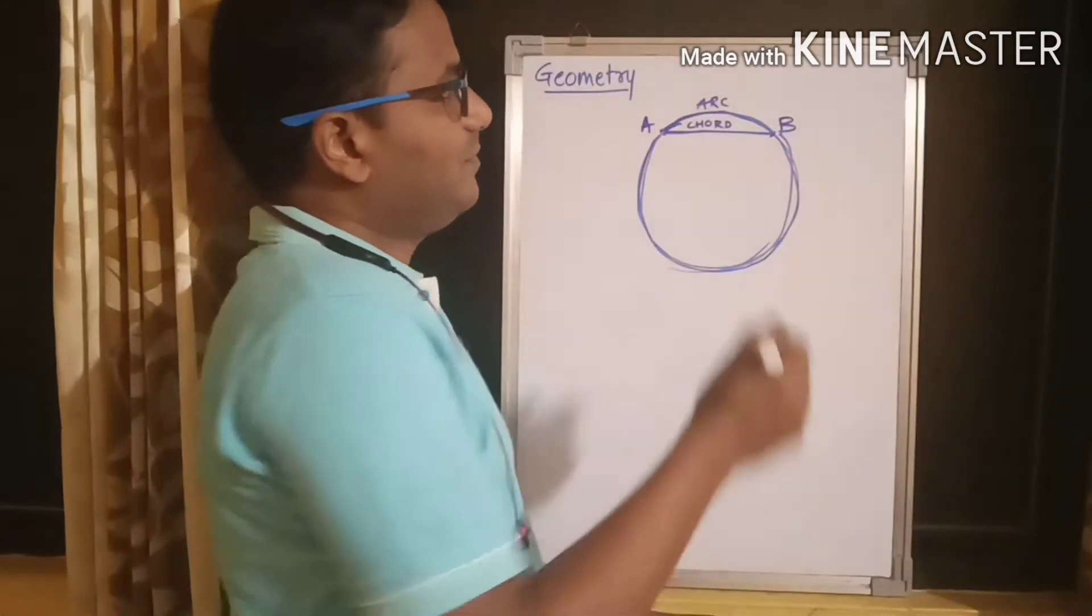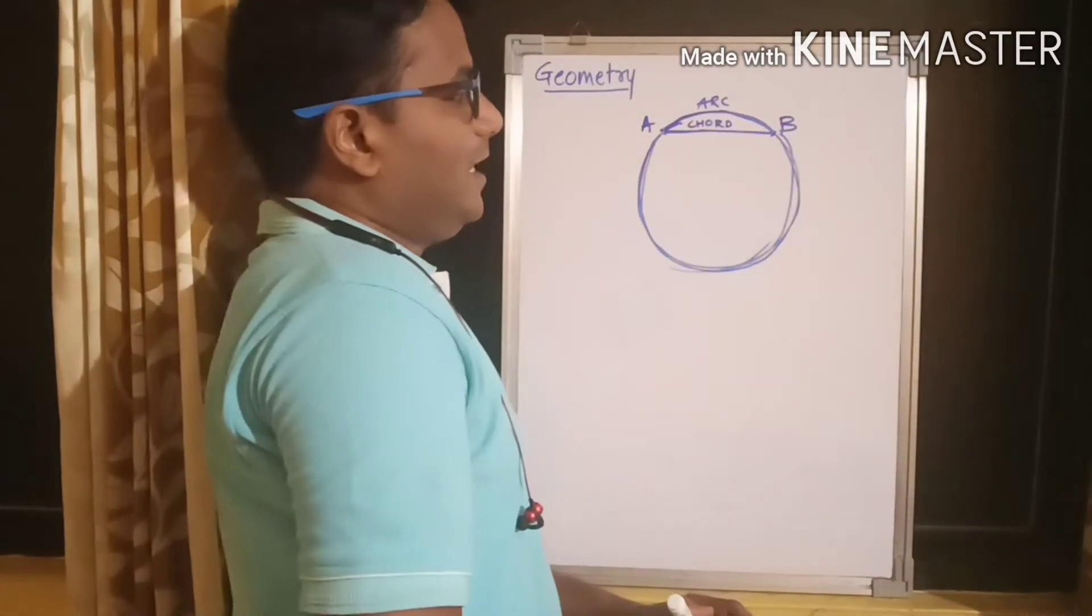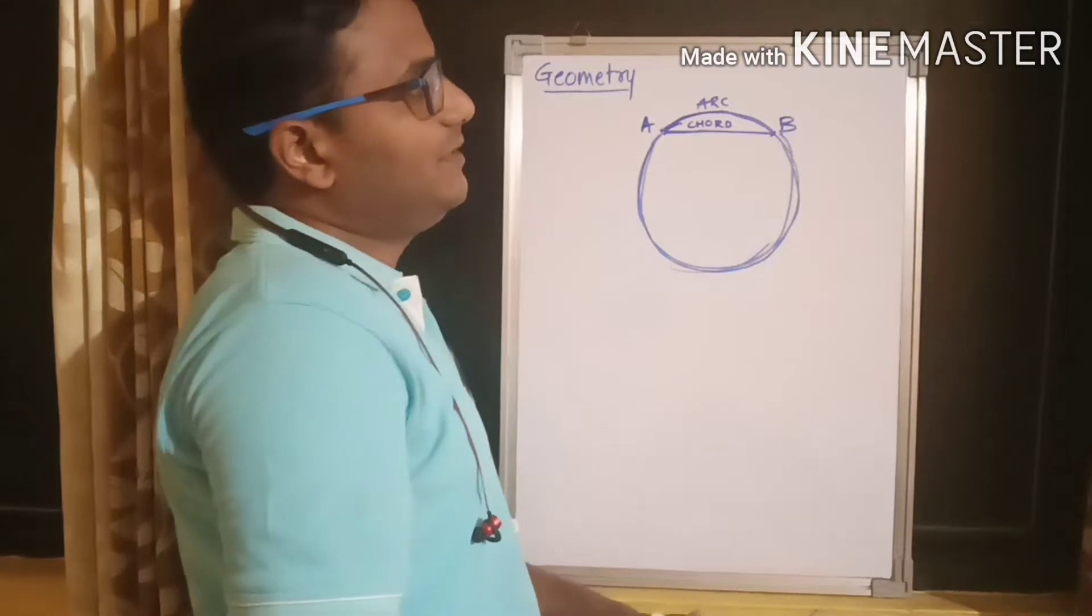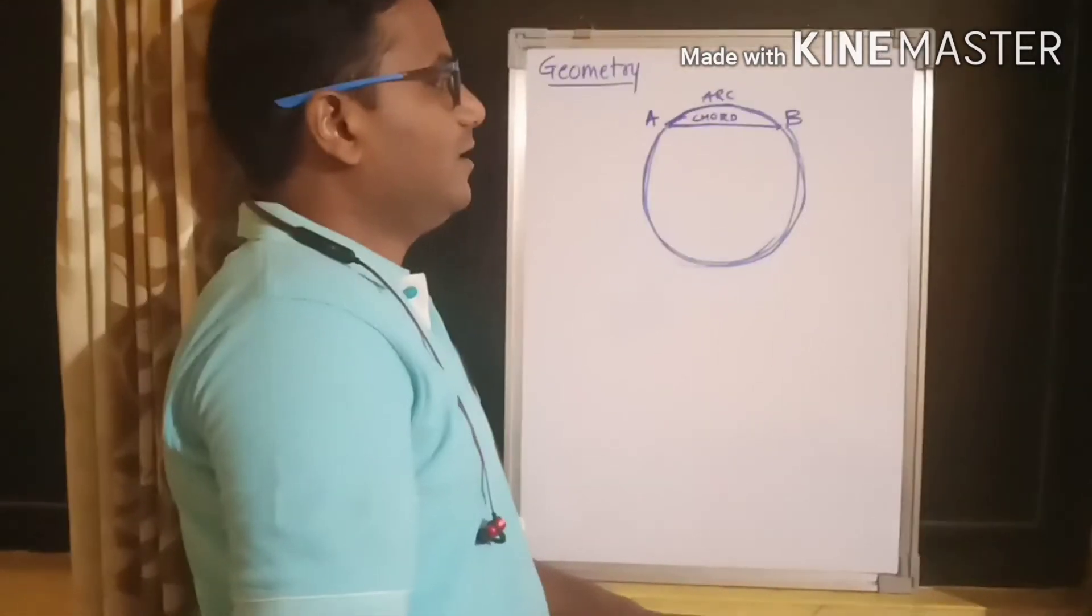Okay, so that means the arc length is always bigger than the chord length. Correct? Now, what will be the relation between these two parameters?